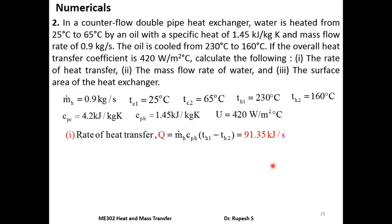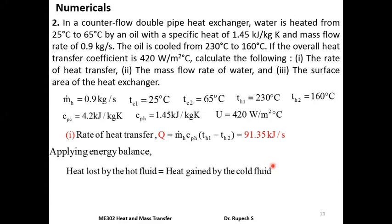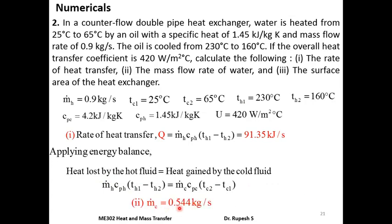The mass flow rate of water (cold fluid) is obtained by applying energy balance: heat lost by hot fluid = heat gained by cold fluid, i.e., m_dot_h × Cph × ΔTh = m_dot_c × Cpc × ΔTc. All parameters except m_dot_c are known. Substituting all values gives mass flow rate of water m_dot_c = 0.544 kg/s.